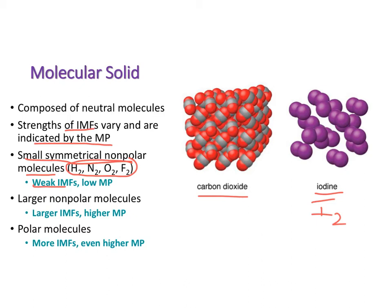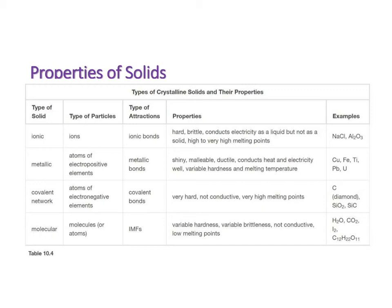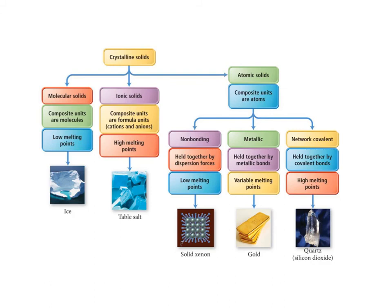Larger non-polar molecules have larger IMFs and therefore a higher melting point. Polar molecules have even stronger IMFs and an even higher melting point. There is a summary table of all the properties of solids covering the types of attractions, properties, and examples. There is also a map that helps you determine what type of solid you have, with examples at the bottom.